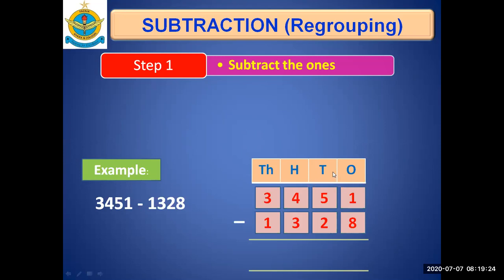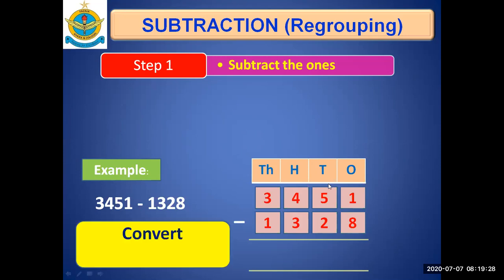As it's ones column, so ones will take borrow from tens column. We are now converting tens to ones. This 5 will give 10 ones. 1 tens, that is equal to 10 ones. This will be given carry to ones column. And it will become 4.